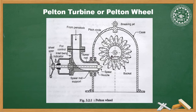The last part is the casing. The casing is the outer covering of the Pelton turbine. It prevents splashing of water and helps discharge the water to the tail race. It also acts as a safeguard in case of any accidental problem. These are the main parts of a Pelton turbine or Pelton wheel.